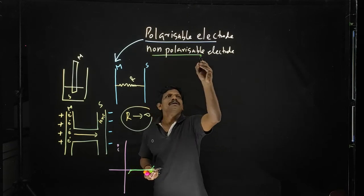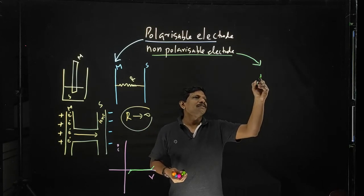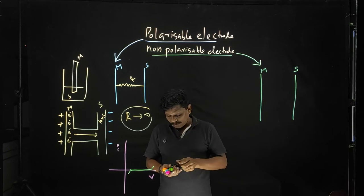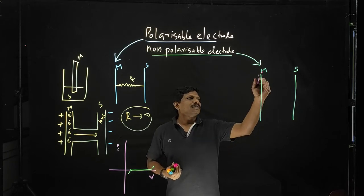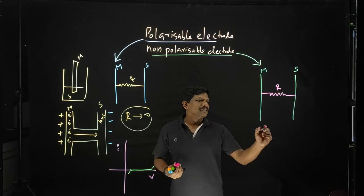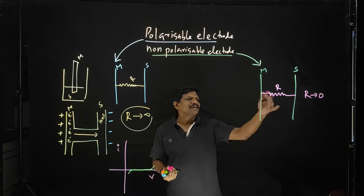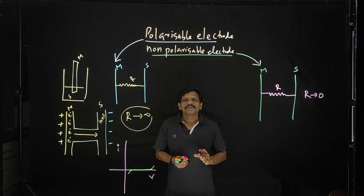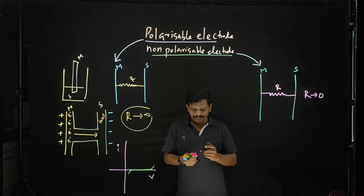Next, I will tell you about the non-polarizable electrode. You can consider the same system — this is your metal and this is your solution. We are connecting it with a resistance R. Suppose this resistance tends to 0 — that means current will flow. That is the only difference between a polarizable and a non-polarizable electrode: the current passes freely through the system.